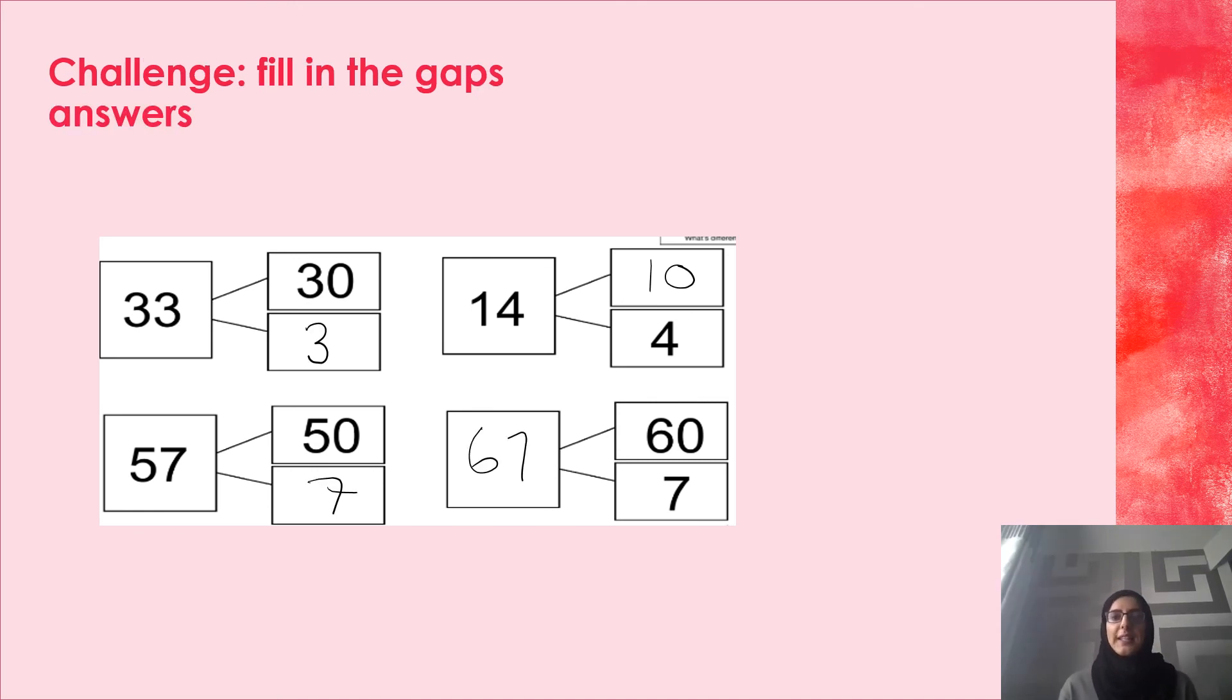Let's take a look at our challenge answers. I've got the number 33. I know I've got 3 tens which makes 30. The answer is there and the missing box definitely is 3 ones. Fantastic. I can see you've got that right. Then I've got the number 57 and the missing box, yes, the 7 ones were missing.